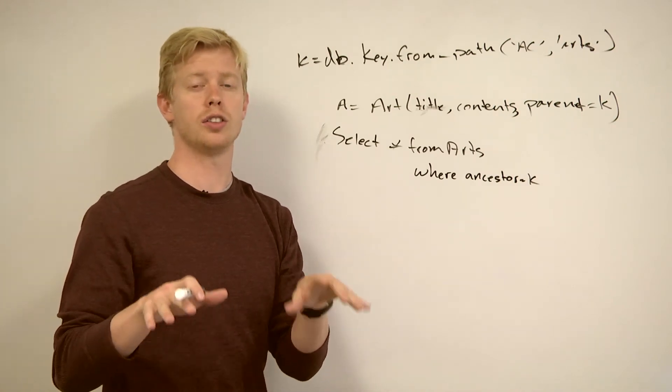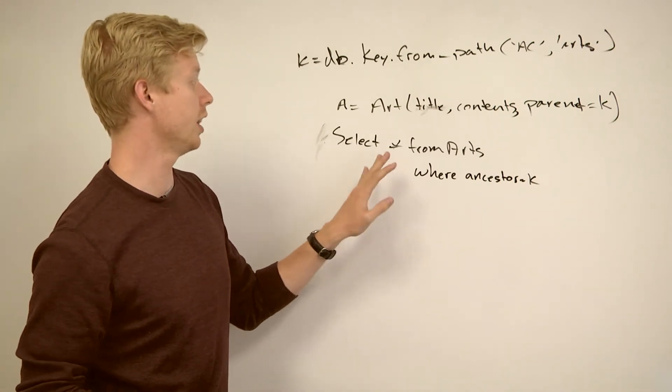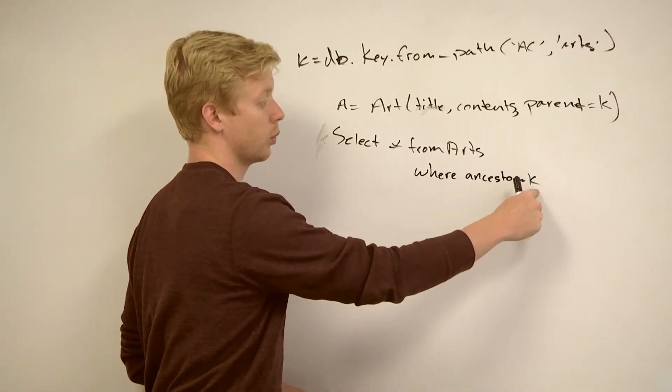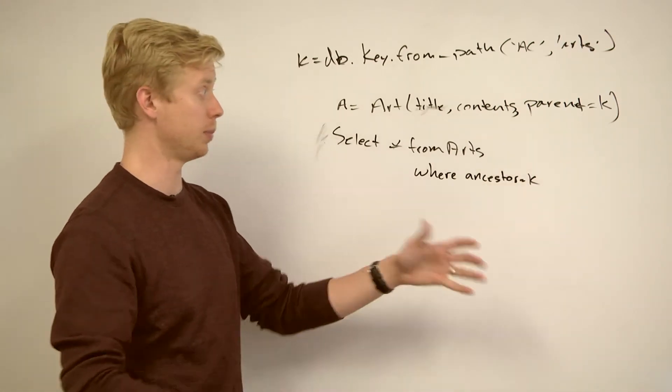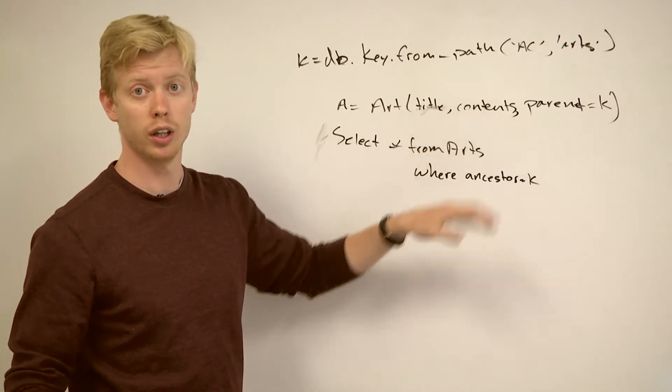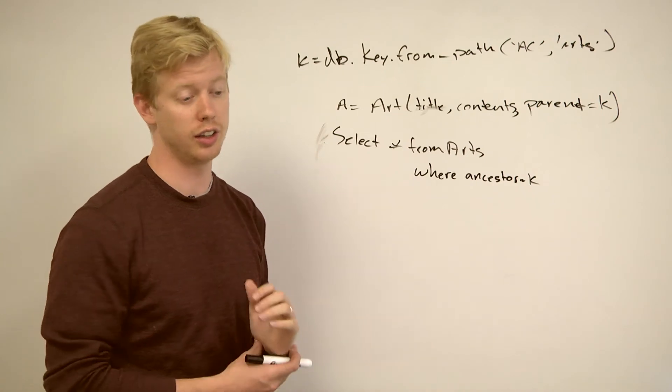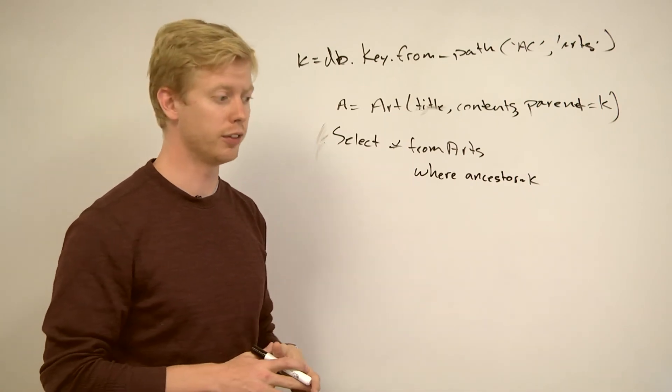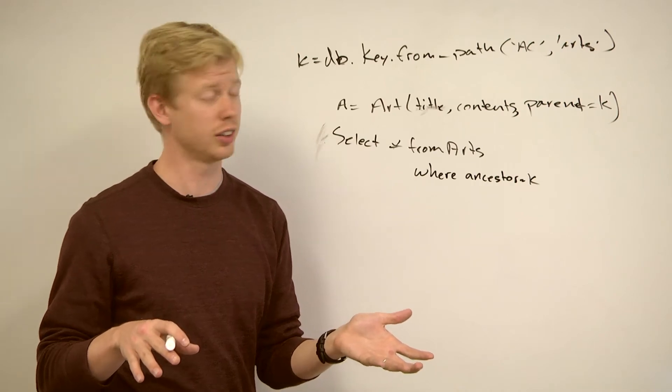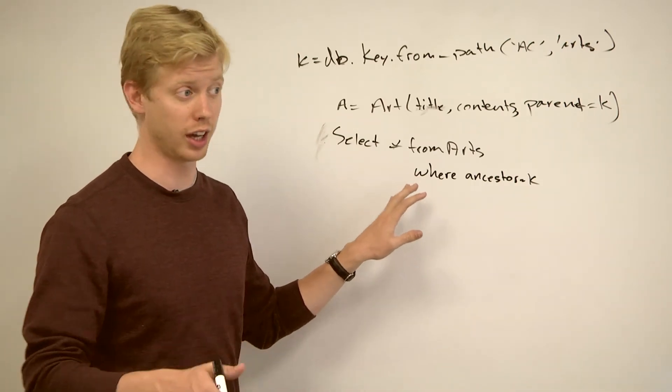What Google is doing there isn't entirely transparent to us, but one of the things they say in their docs is that if you include this constraint ancestor equals something, and that happens to be an ancestor of the object you're looking for, the query will be consistent. And so that's all I was doing there. And if you look at the datastore docs, if you go to that hello world example in the datastore docs, it'll actually explain that a little bit, and that's what I was basing this on.